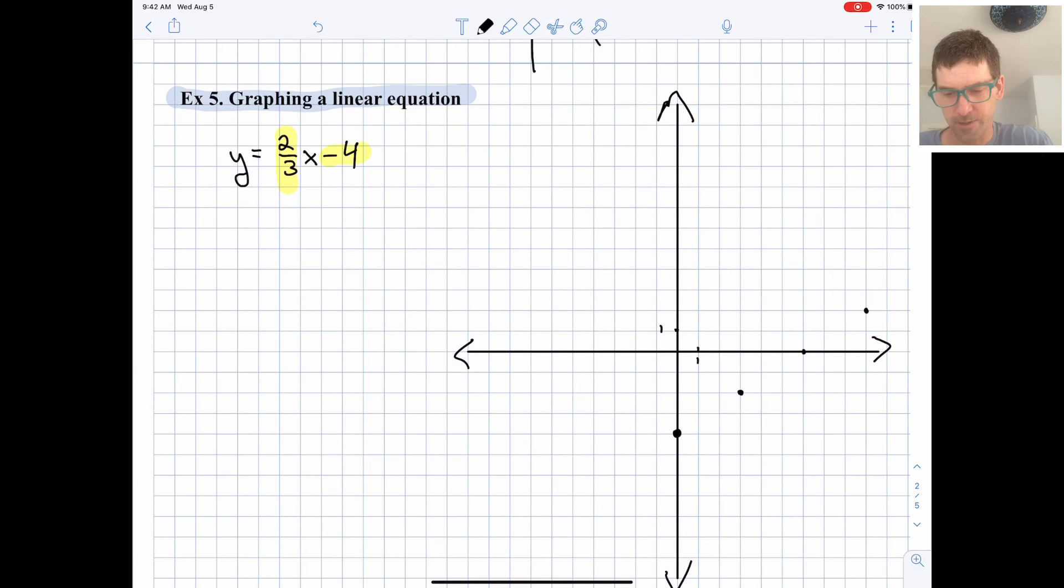And it looks like all our points are falling in a straight line. So that's good, so we'll pull out our ruler and try to connect these guys. And there, we just graphed our linear equation. Alright, that's a good place to stop.